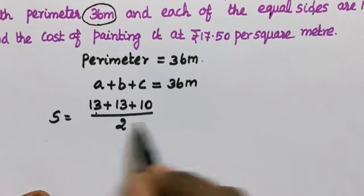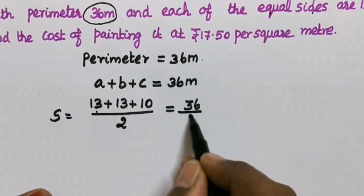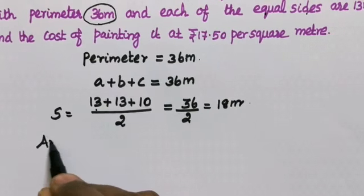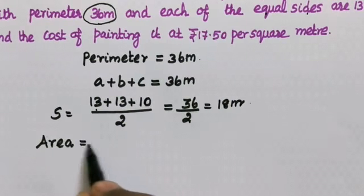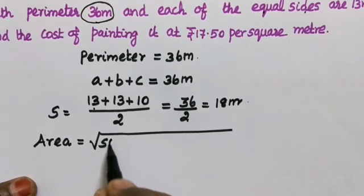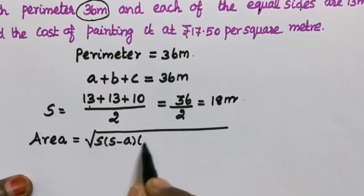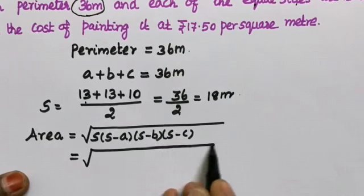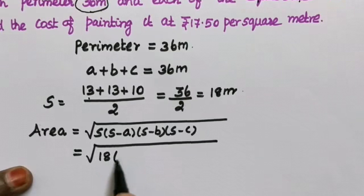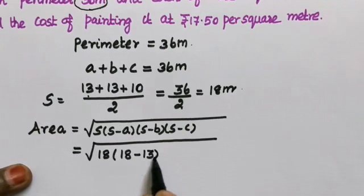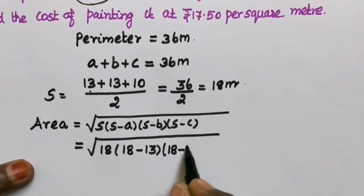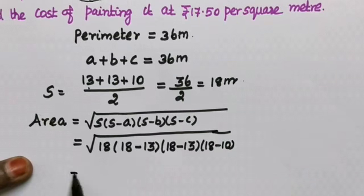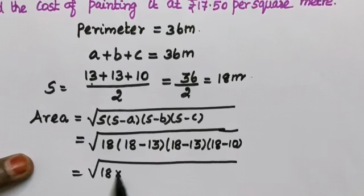s is calculated as perimeter divided by 2. So 36 divided by 2 gives us s. Adding up: s equals 18.